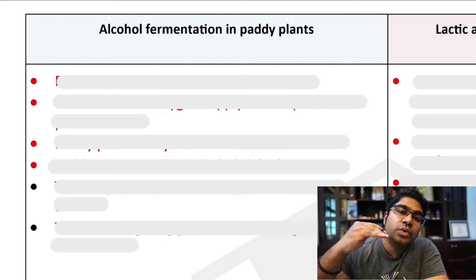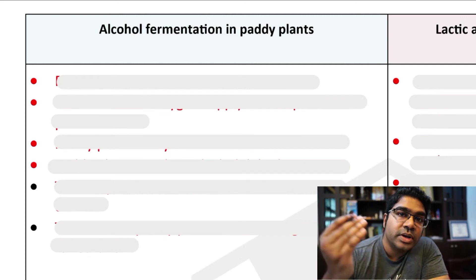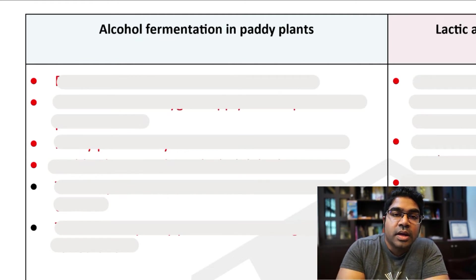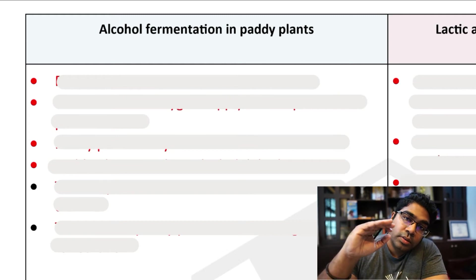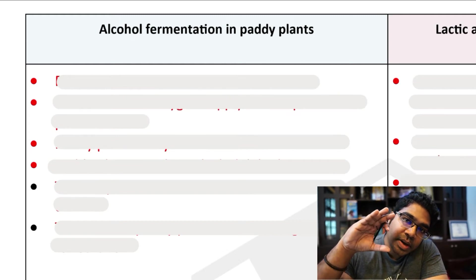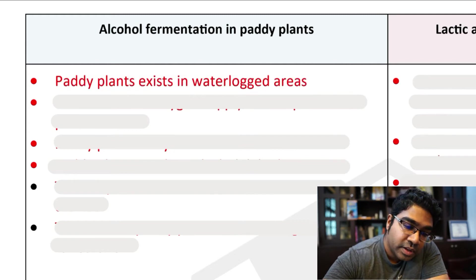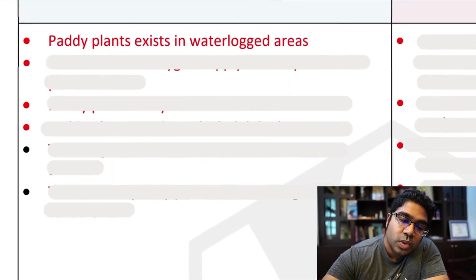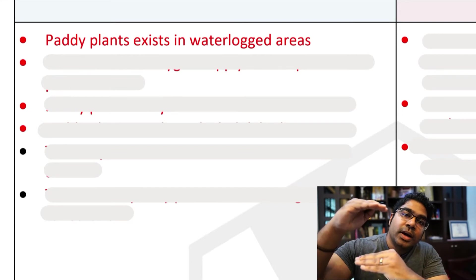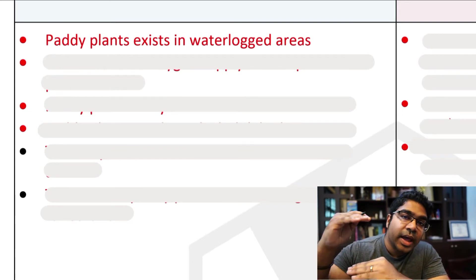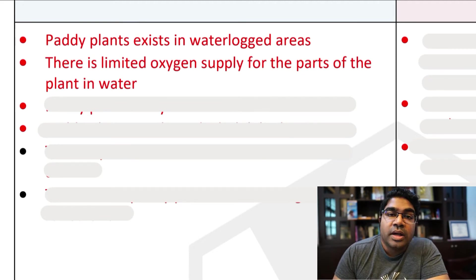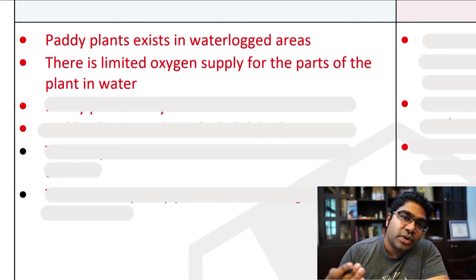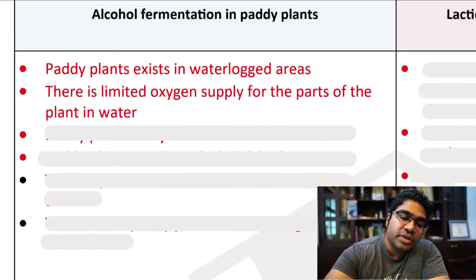However, if you have seen a paddy field, you can even google it, and you will see that it is basically drowning in water. The significant part of the paddy plant is submerged in water at the bottom. So paddy plants exist in waterlogged areas. The region where they are submerged in water actually has a low concentration of oxygen. There's a limited supply of oxygen and so therefore the plants are forced to undergo anaerobic respiration in the form of alcohol fermentation.